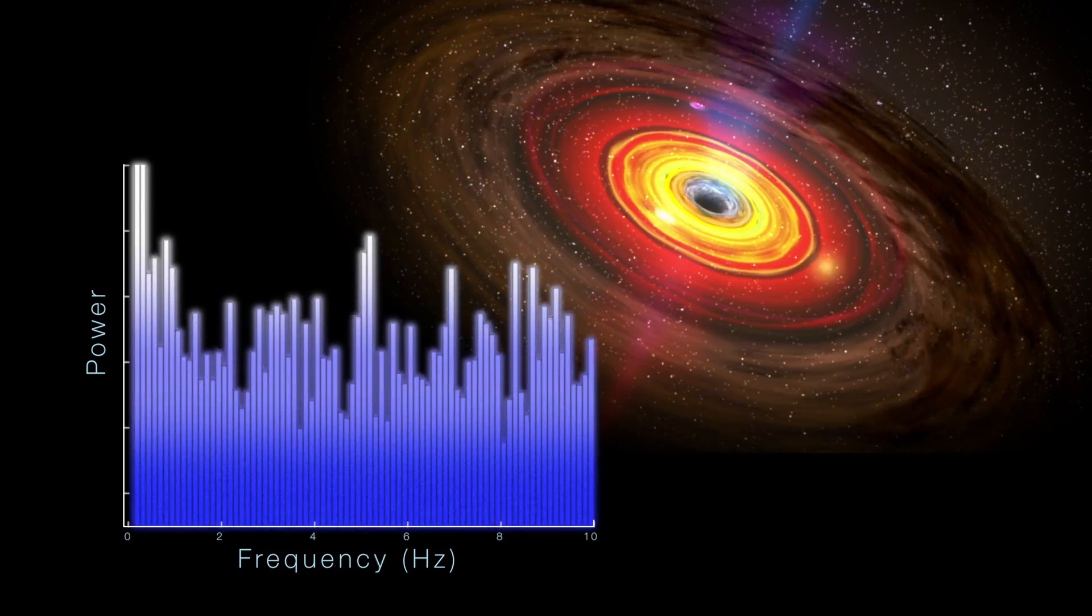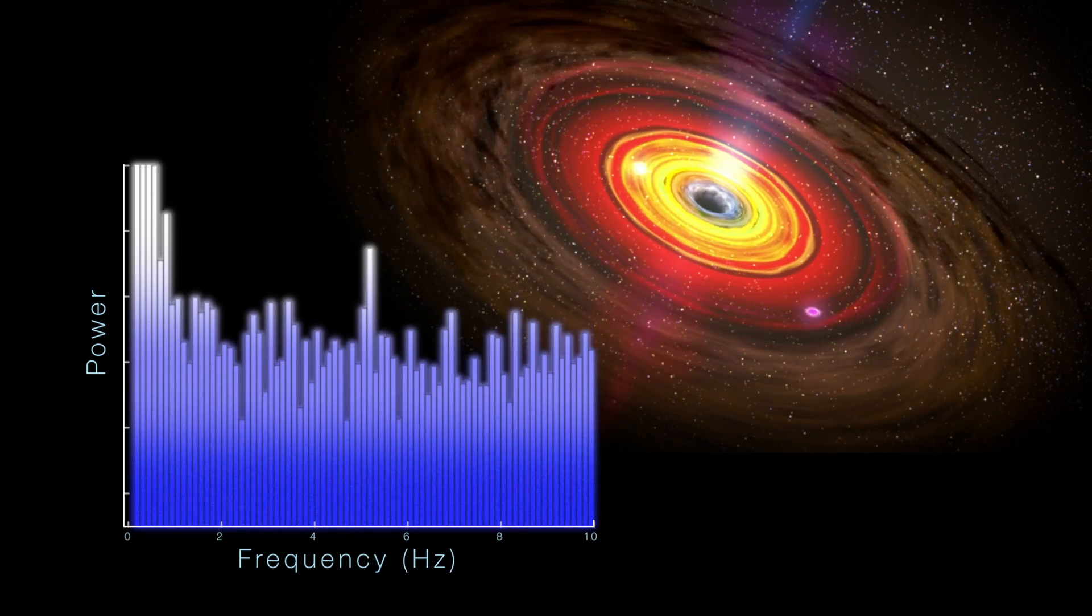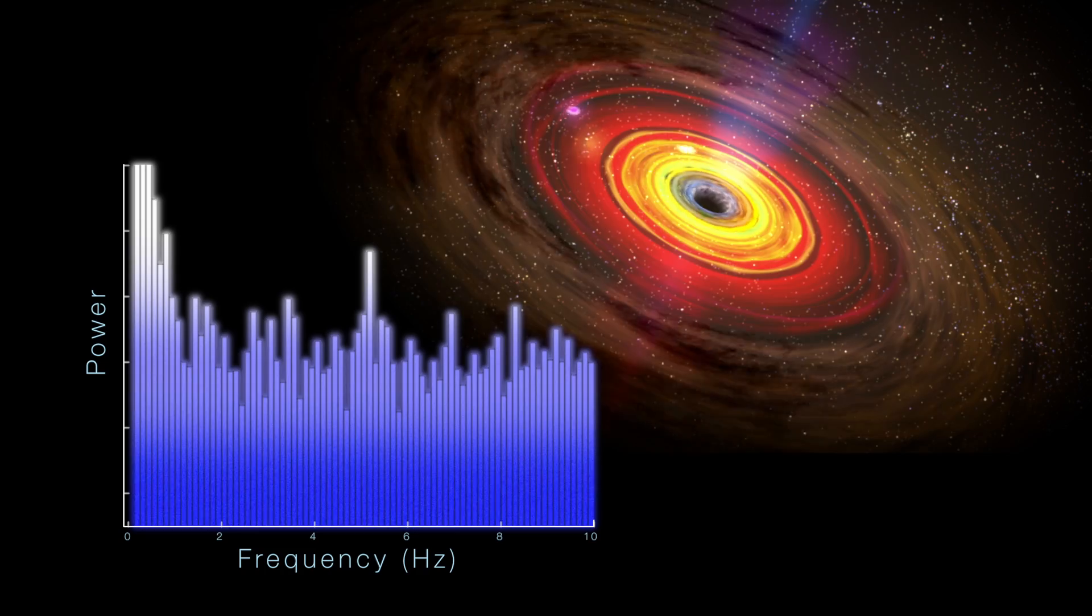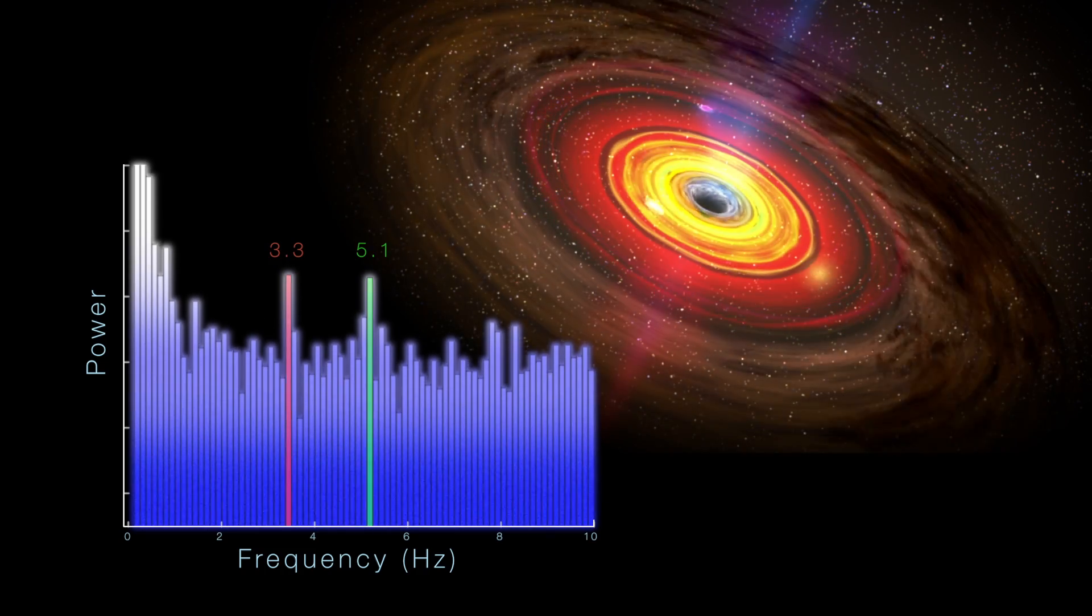In searching through six years of RXTE observations of M82X1, astronomers recently found this key signature. One hot spot flashes 5.1 times a second, while the other flickers 3.3 times a second. A solid 3-to-2 relationship.